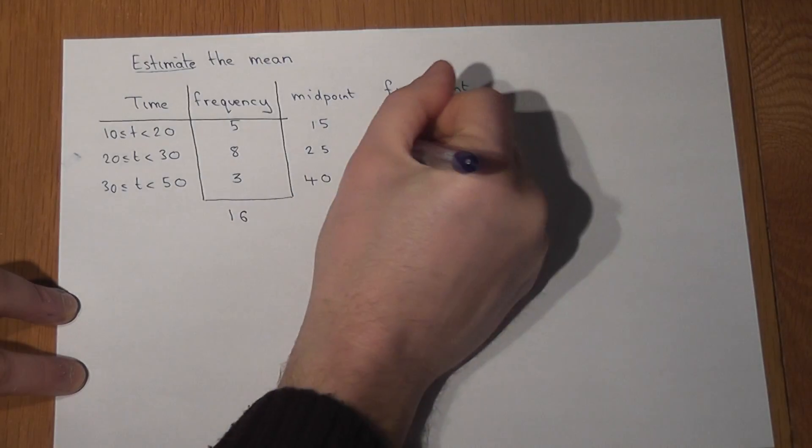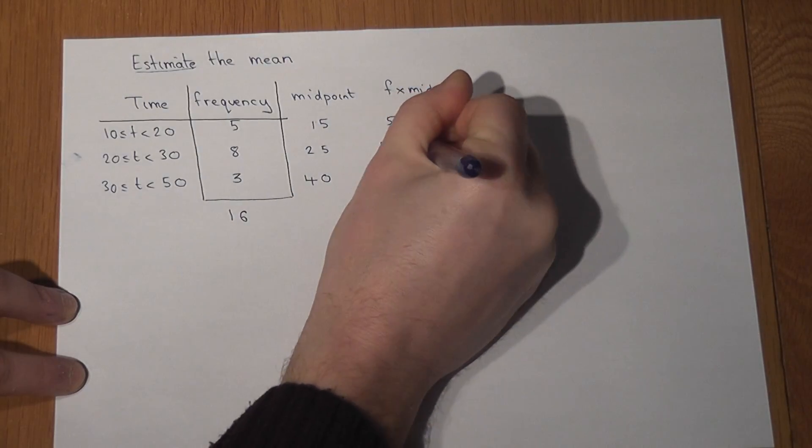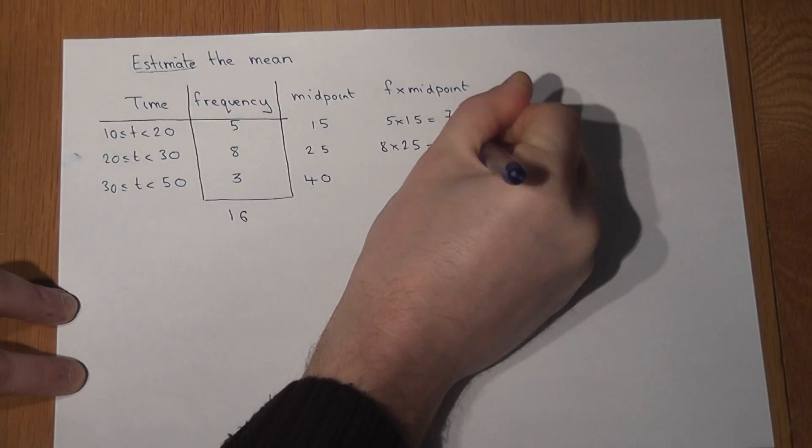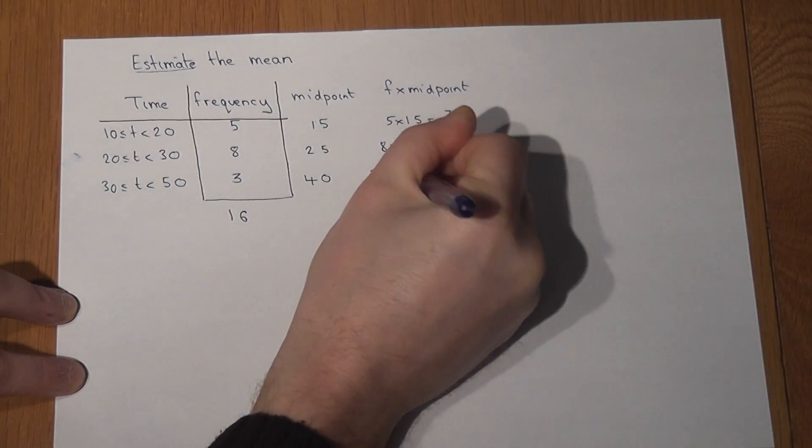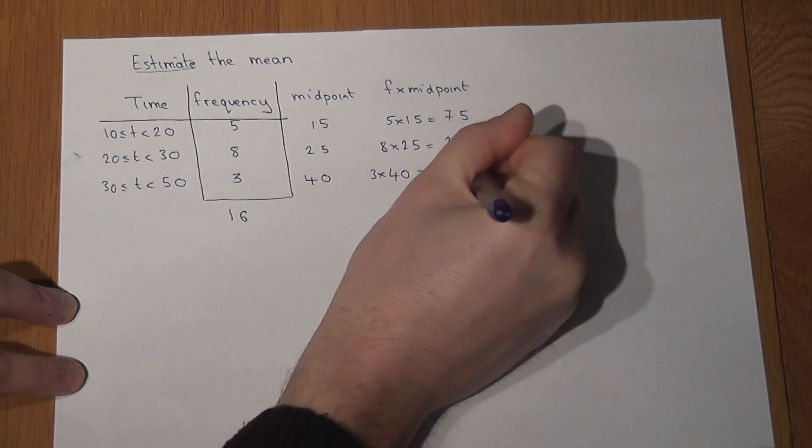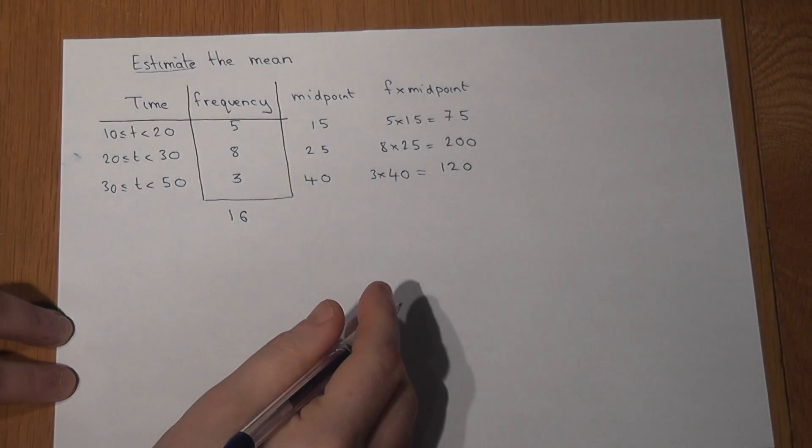In the exam, they might have two columns drawn out already. If not, just add on these two columns. And to find the mean, it's the total time divided by the total number of people.